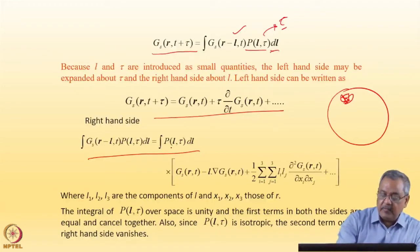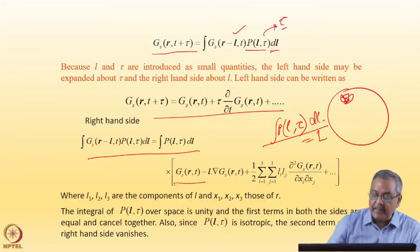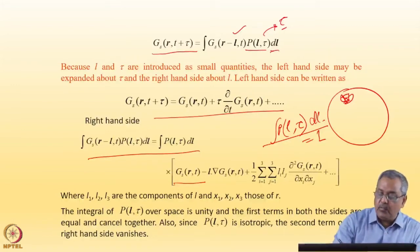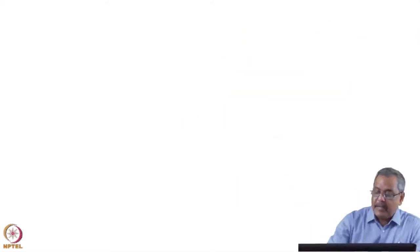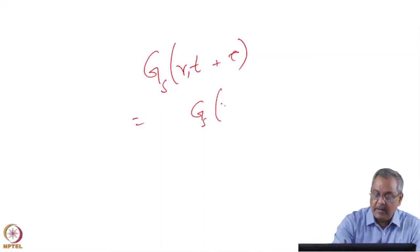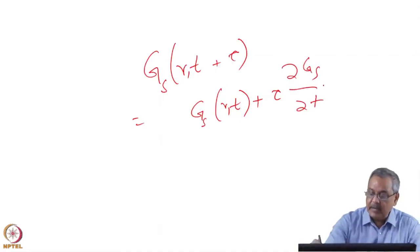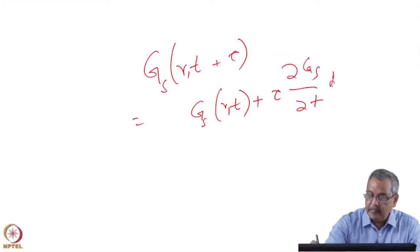Gs can be taken outside this expression because there is no P(l, τ) involved in this term. Once I take it out, we know that P(l, τ) integrated over all jump lengths must equal one — at least the particle jumps with any length — so ∫P(l, τ)dl = 1. I can write Gs(t+τ) equal to Gs plus τ·dGs/dt and so on.